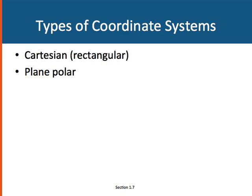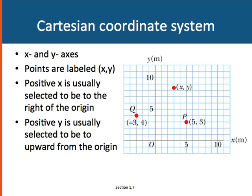There's two types of coordinate systems we'll be using this semester: Cartesian or rectangular coordinate systems and plane polar. The Cartesian coordinate system is one you're probably most familiar with. You have x and y axes, and the points on this are labeled with an ordered pair, x, y.